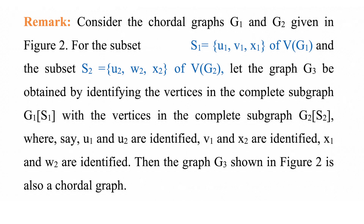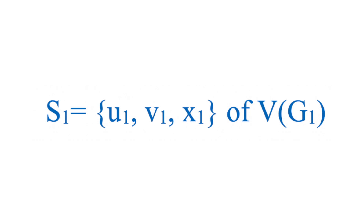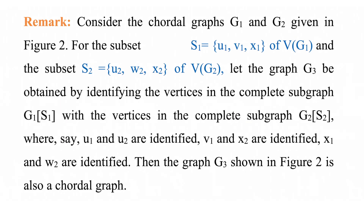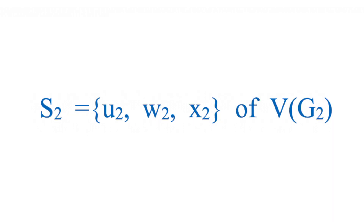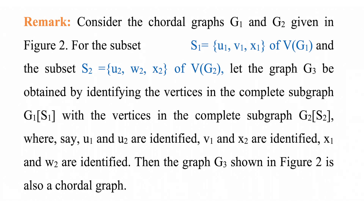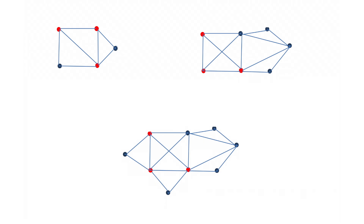From Theorem 1, one may deduce that every connected chordal graph can be built by pasting together complete graphs in a tree-like fashion. Consider chordal graphs G1 and G2. For the subset S1 = {U1, V1, X1} of V(G1) and subset S2 = {U2, W2, X2} of V(G2), let G3 be the graph obtained by identifying the vertices in the complete subgraph induced by S1 with those in the complete subgraph induced by S2, where U1 and U2 are identified, V1 and X2 are identified, and X1 and W2 are identified. Then G3 is also a chordal graph.